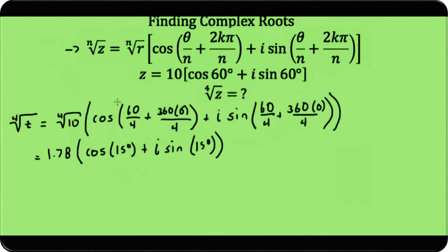For our next solution, our k value goes up to 1. So this is going to become 60°/4, which is 15°, plus (360 times 1)/4. 360 times 1 over 4 is 90.